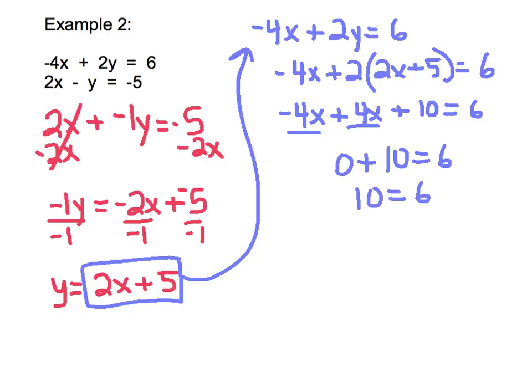Remember that when all of our variables cancel each other out, and what's left over is not equal to each other, that means that this is no solution. That means there is no ordered pair that will work in both of these equations at the same time.